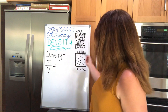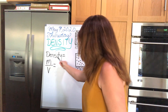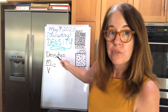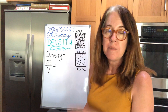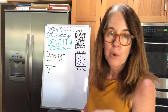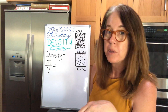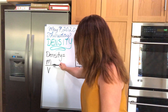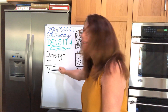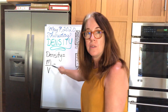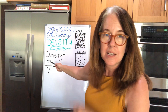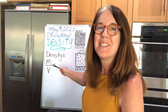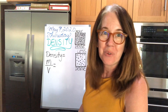So what we're working with today is the idea that density is a mathematical formula — and that formula is a division problem. It's a very easy division problem: mass divided by volume. The M stands for mass and the V stands for volume, so they're making it easy for you.